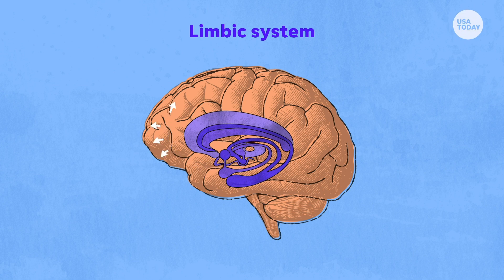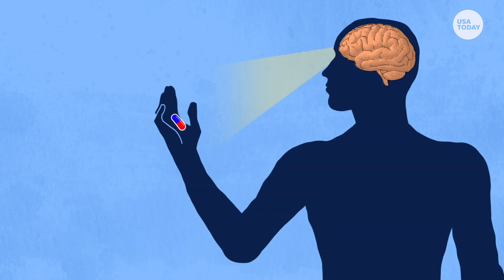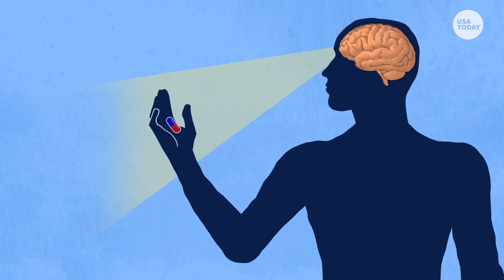Over time, the recurring shot of dopamine can turn a compulsion into an addiction. The brain starts thinking it must have more of the drug or behavior. As the addictive behavior takes hold, the brain will rewire itself, making it harder to stop the destructive behavior.